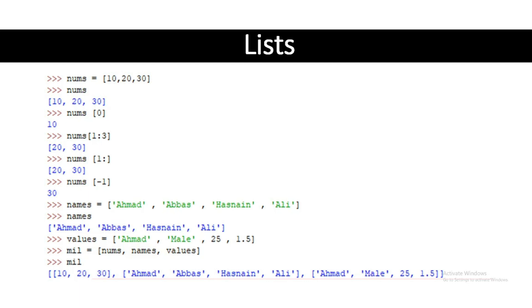We can access any element of a list. For example, nums[1] and nums[2] will print the elements at index 1 and index 2, which are 20 and 30. We can also store strings in a list, for example: names = ['Amand', 'Abbas', 'Hasnan', 'Ali'].